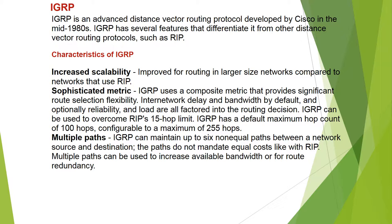IGRP has a default maximum hop count of 100 hops, comparable to RIP's maximum of 15. IGRP can maintain up to 6 unequal-cost paths between a network source and destination — the paths do not need to be equal cost as with RIP.